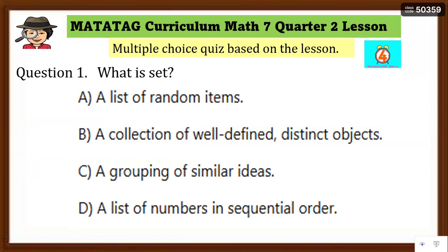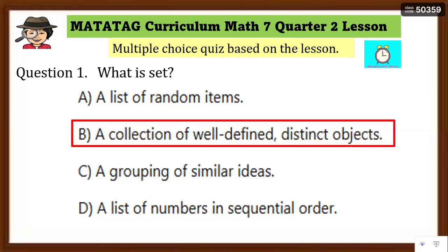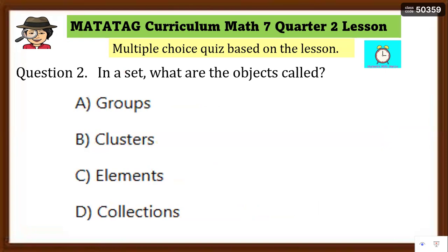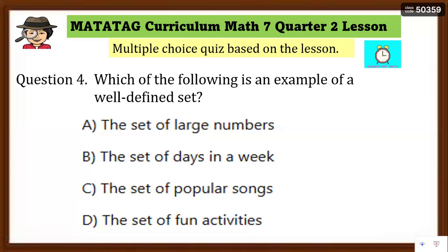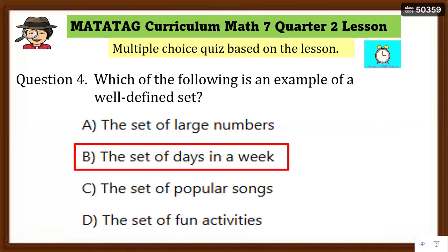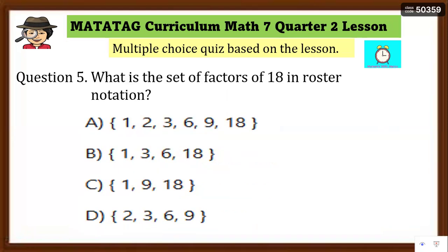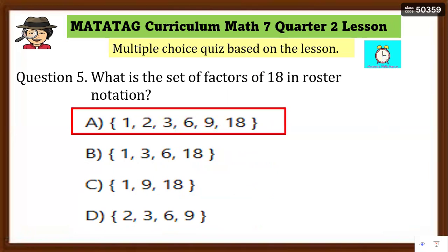Multiple choice quiz: What is a set? Answer: B — a collection of well-defined distinct objects. In a set, what are the objects called? Answer: elements. What symbol is used to enclose the elements of a set? Answer: C — curly braces. Which is an example of a well-defined set? Answer: B — the set of days in a week, since there are exactly 7 days. What is the set of factors of 18 in roster notation? Answer: A — {1, 2, 3, 6, 9, 18} since 1×18, 2×9, 3×6.